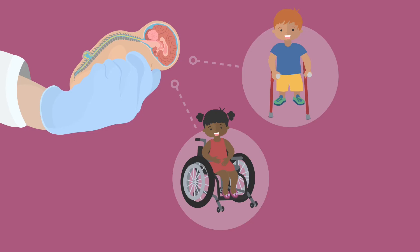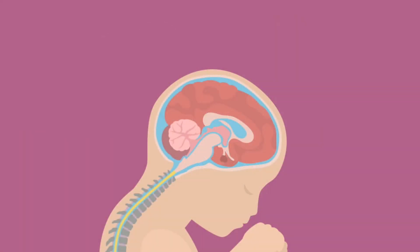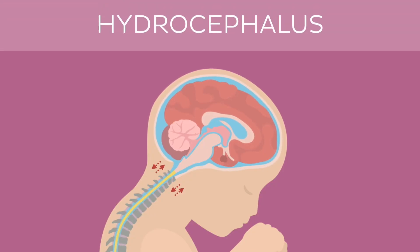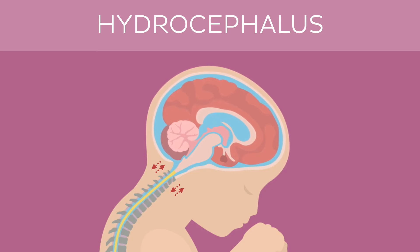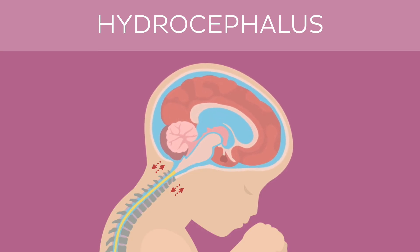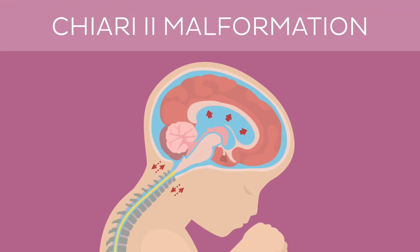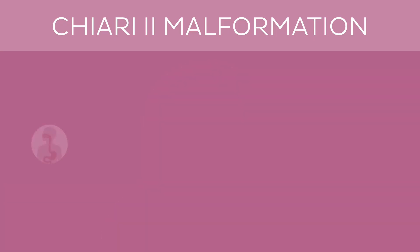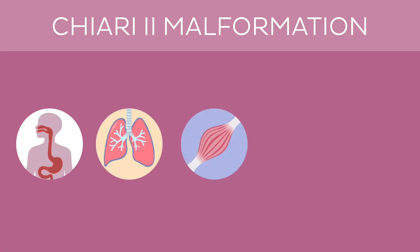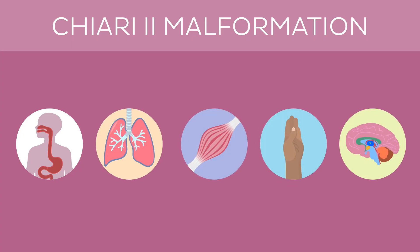Myelomeningocele is often associated with one or more other conditions. In many cases, the normal flow of cerebrospinal fluid is interrupted, which leads to hydrocephalus — a condition in which the cerebrospinal fluid cannot flow normally but rather accumulates in the brain and imposes pressure on it. In addition, babies with myelomeningocele also often have a condition called Chiari 2 malformation, in which the cerebellum and brainstem are pushed towards the vertebral canal. This can further complicate the hydrocephalus, and also injure brain tissue, causing symptoms such as difficulty swallowing, breathing problems, muscle weakness, balance and coordination issues, and developmental delays.